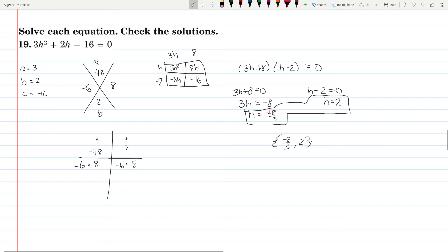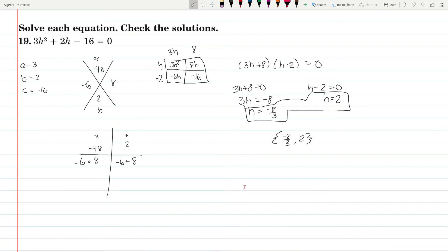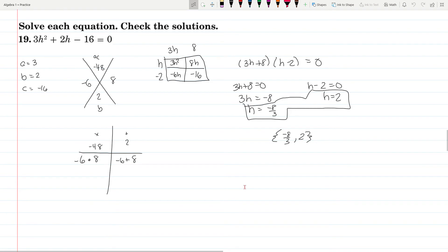Subtract the 8, you get 3h equals negative 8. Divide by 3, you get h equals negative 8 thirds as an option. Add 2, you get h equals 2. So negative 8 thirds and 2 is your solution. And you could show check steps, but for the sake of time I didn't show it. But I can assure you these answers are right. Normally when you check, you substitute back in and make sure the left side equals the right side.